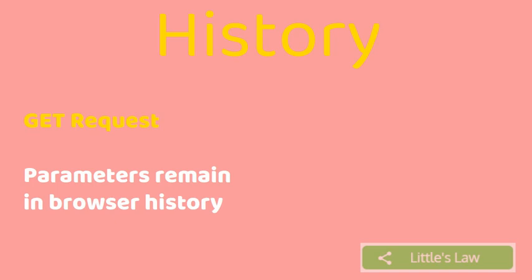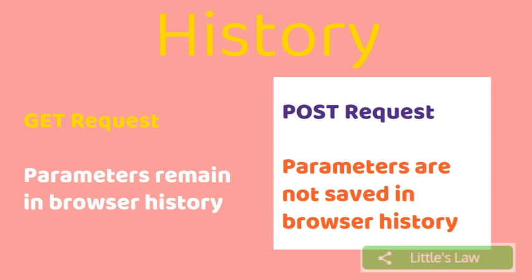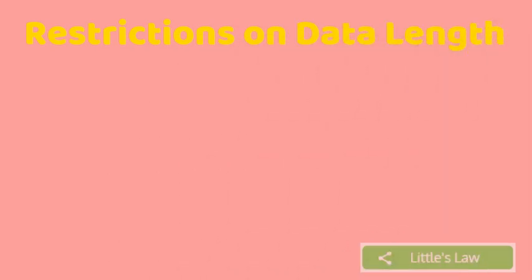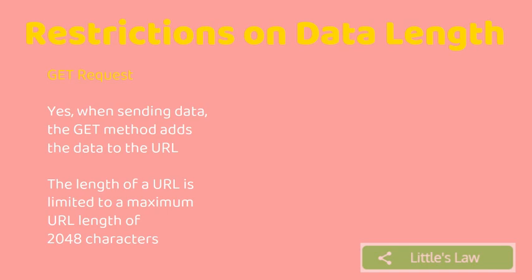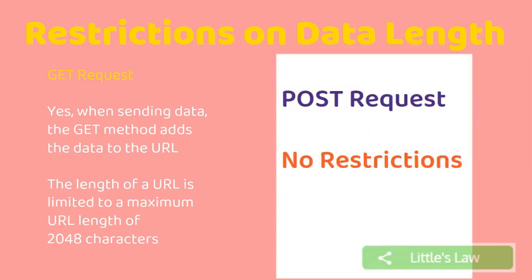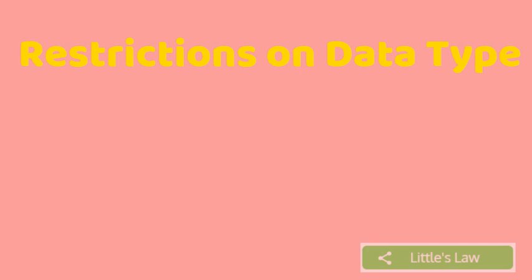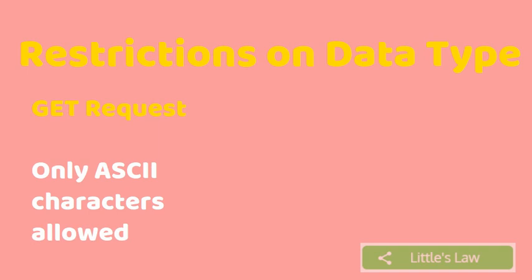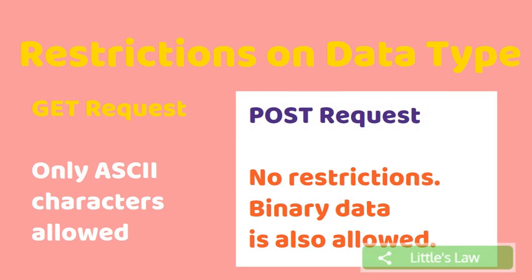For history, parameters remain in the browser history for GET requests, but are not saved for POST requests. For data length restrictions, GET adds data to the URL and the URL is limited to a maximum of 2048 characters, whereas POST has no restrictions. For data type, GET requests allow only ASCII characters, while POST requests have no restrictions and binary data is also allowed.